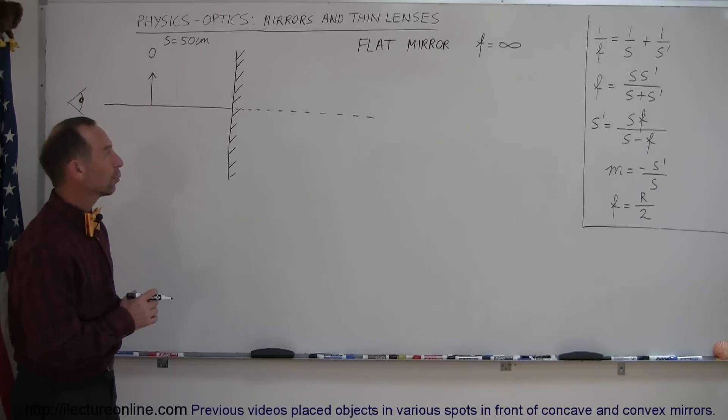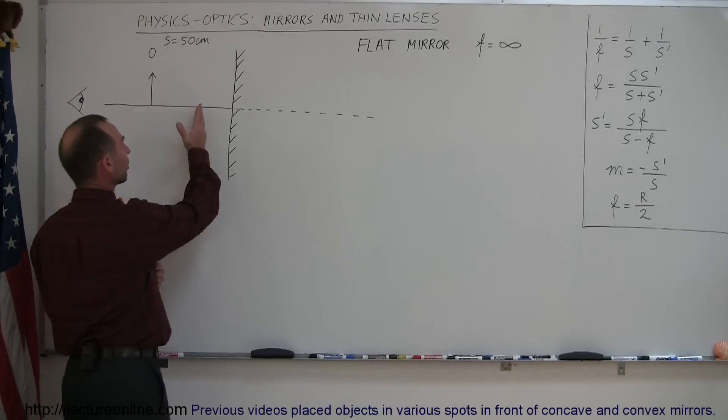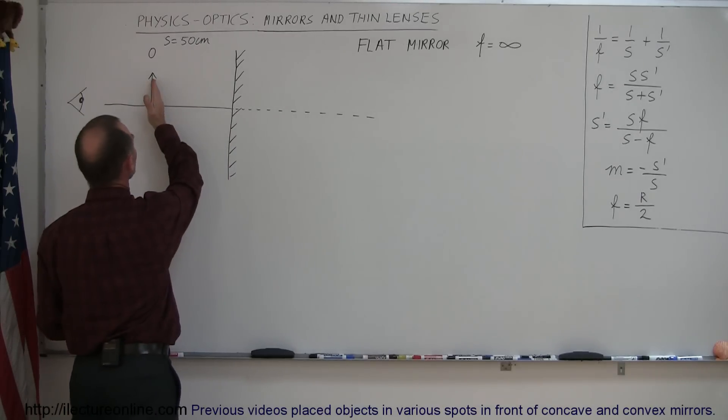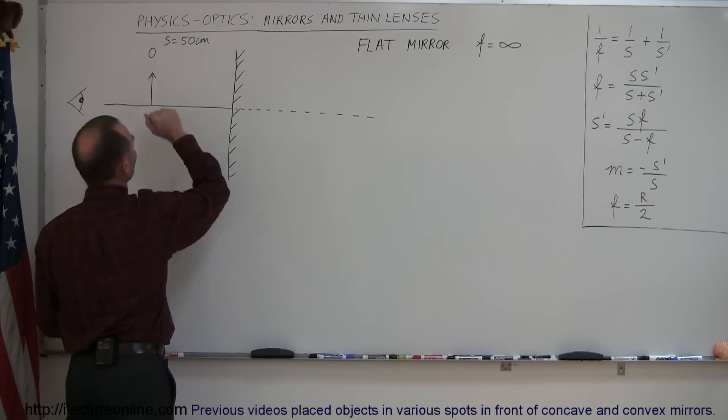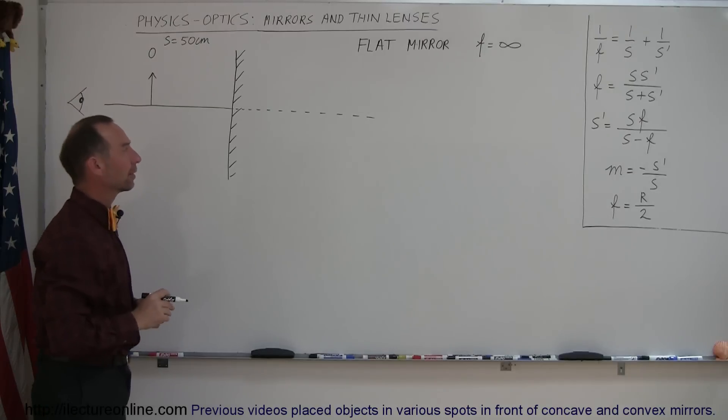Our next example here is with a flat mirror. Now here's the front of the mirror, the back of the mirror, here's the object placed at an object distance 50 centimeters away from the mirror.